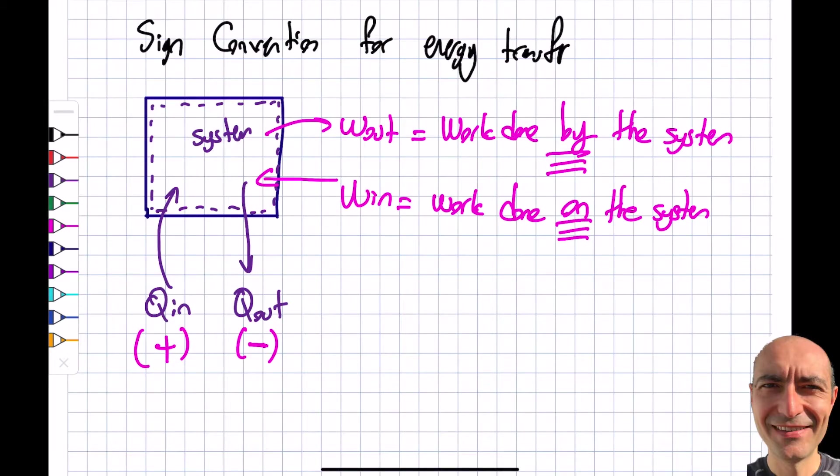Let me explain the confusion. Work out is going to be called positive, and work into the system is negative. Yeah, this is confusing. Looking at the system perspective, you're right that this is confusing. If there's work out, I put a positive—that doesn't make sense. Let's assume it's adiabatic, so there's only work. If there's work out, the energy of the system goes down, but I put a positive sign here. What's up with that?